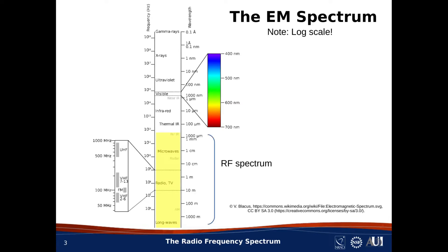As a reminder, here's a diagram that shows the entire EM spectrum. At the bottom, highlighted in yellow, is the portion that we refer to as the radio frequency spectrum. Generally, when we talk about radio, we're referring to frequencies below about 300 GHz and wavelengths longer than about 1 mm in free space. However, most of the action happens below about 100 GHz, and most of the trouble in terms of spectrum management happens below about 30 GHz.